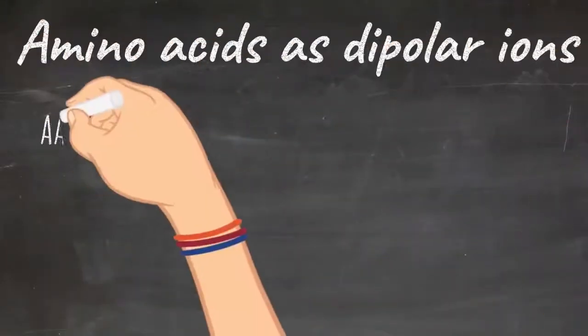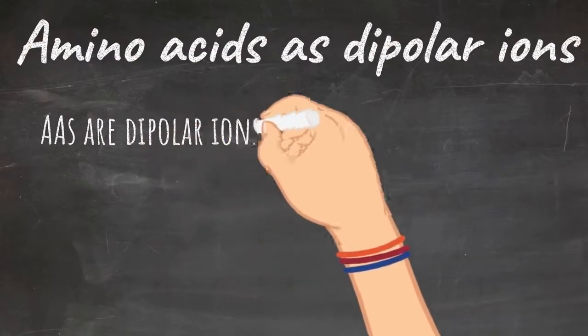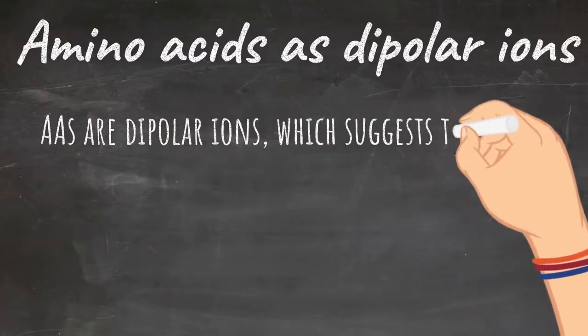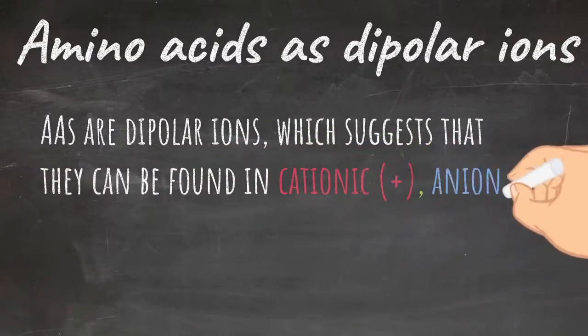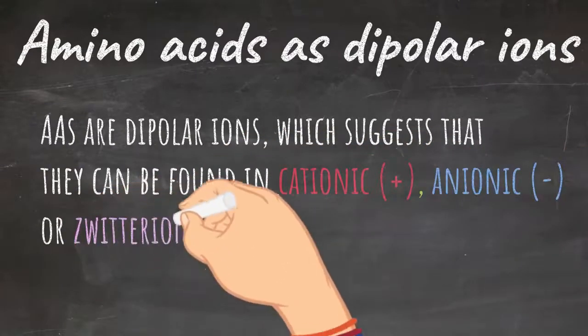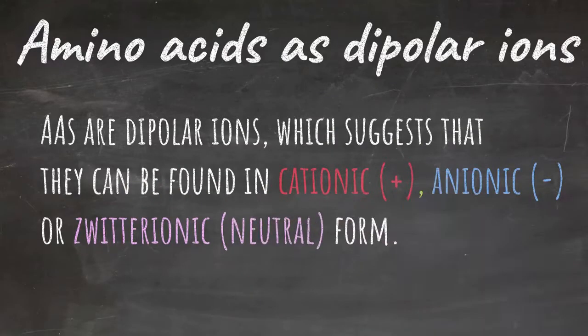Amino acids are dipolar ions which suggest that they can be found in cationic, which is positive, anionic, which is negative, or zwitterionic, neutral form. In the body they are often found in zwitterionic form because the human body is held at a neutral pH.